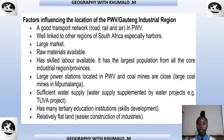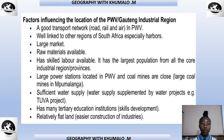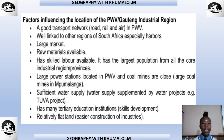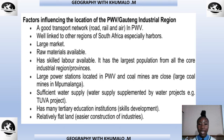A good transport network — road, rail, and air — links PWV to other regions of South Africa, especially harbors. A large market, available raw materials, and skilled labor are present. It has the largest population of all core industrial region provinces. Large power stations and coal mines in Mpumalanga are nearby, and water supply is supplemented by projects such as the Tugela-Vaal project.